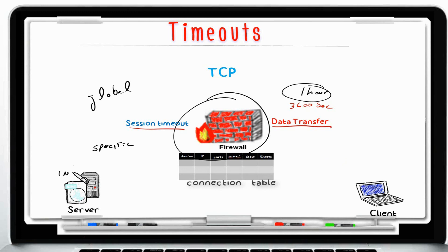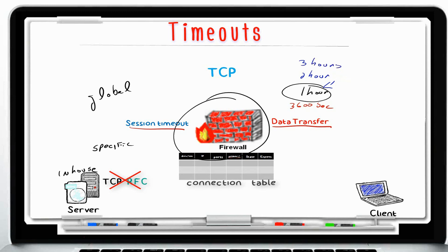I have seen customers with an in-house application whose service does not follow standard TCP RFC standards, or at least the standards that Check Point follows. In those cases, connections were getting terminated every hour even though the client and server were still passing traffic. When troubleshooting, I increased the TCP session timeout to two hours and the connections were then terminated every two hours. Increasing it to three hours caused the problem to follow — confirming that I was dealing with an application that does not follow standard TCP RFC practices.